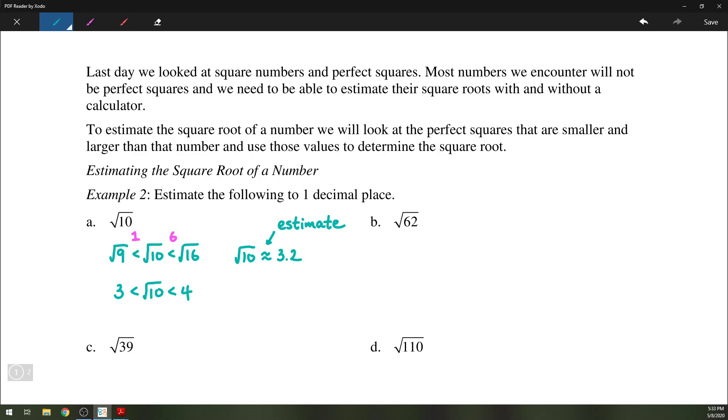Same thing, let's look at a few more of these. We're looking at the square root of 62. The closest perfect square is probably 64, which is just above. And below that we have 7 squared, which is 49. So that places the square root of 62 somewhere between 7 and 8.